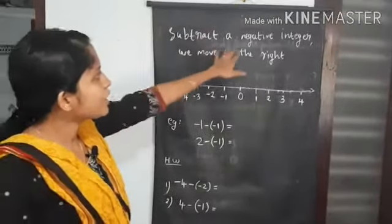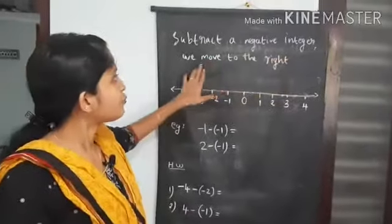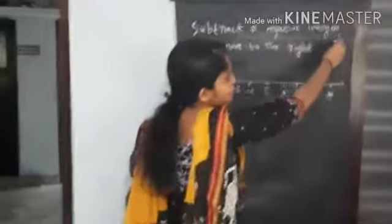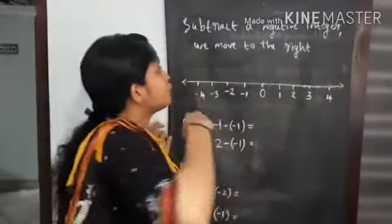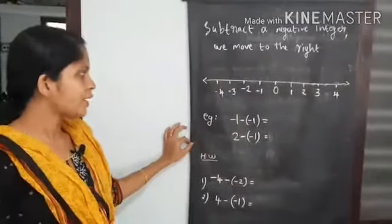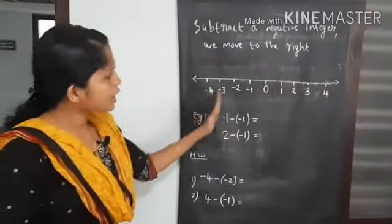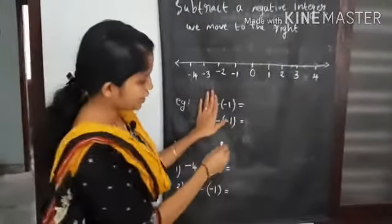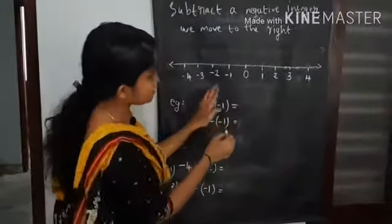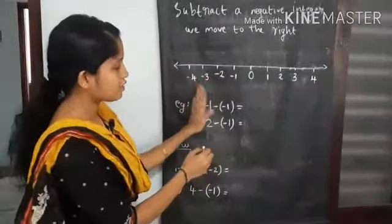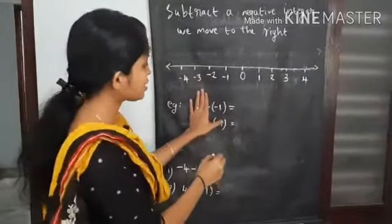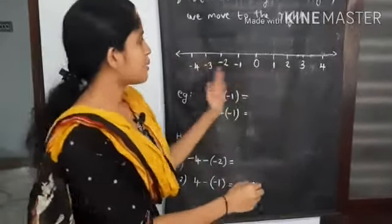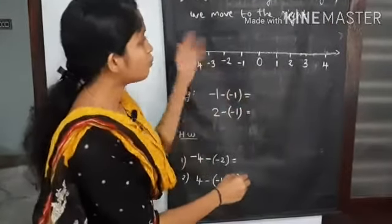Our next point is: subtract a negative integer — we move to the right. When we subtract a negative integer, we move to the right.